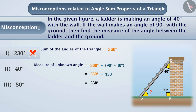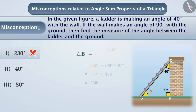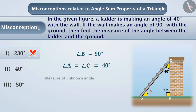Similarly, some students have a misconception that if one of the angles of a triangle is 90 degrees, then the other two angles are equal. With this understanding, they think that the measure of the unknown angle is 40 degrees, so they choose option 2. But this is also incorrect understanding.